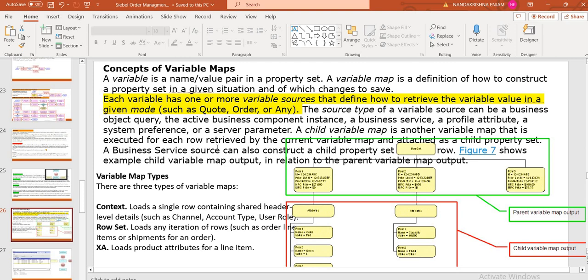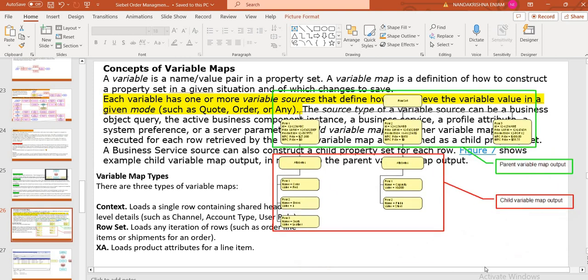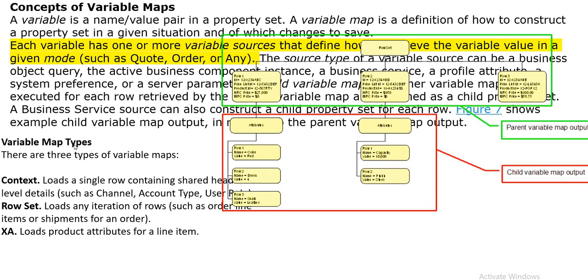When you define each variable, one or more variable structures — for example between Quote and Order — the source is the business component and the active instances you will take. It works on the active context where you are doing customization. Whenever there are variable map types, you need to understand this terminology. From the diagram I explained: there are three types of variable map — Context, Row Set, and XA. Context is the load of a single row containing a shared header at the header level.